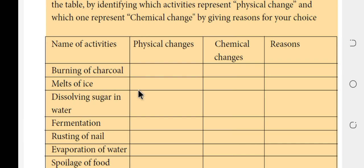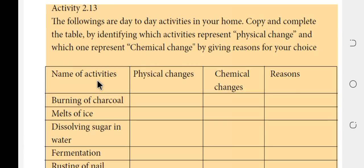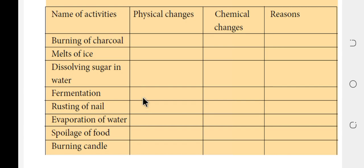Melting of ice is a physical change — no new substances are formed. Dissolving sugar in water is also a physical change. Fermentation is a chemical change. Rusting of a nail is a chemical change. Spoiling of food is a chemical change.